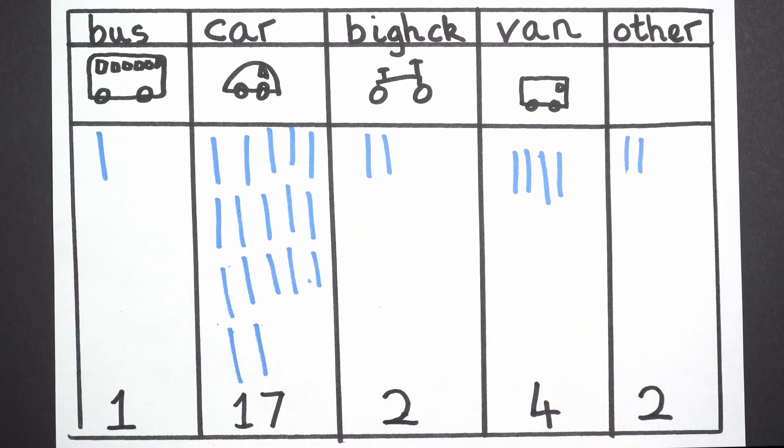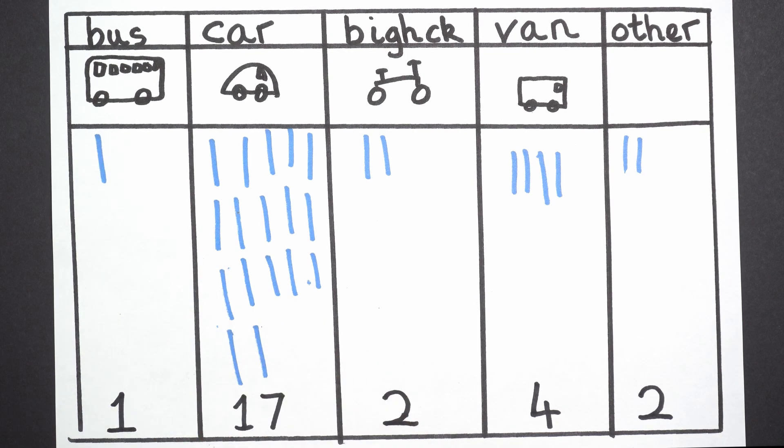My second question was which was the least most common vehicle? What was the smallest number of vehicles that we saw? Was it bus, car, bike, van, or other? And the answer was the bus because one is the smallest of all those numbers.